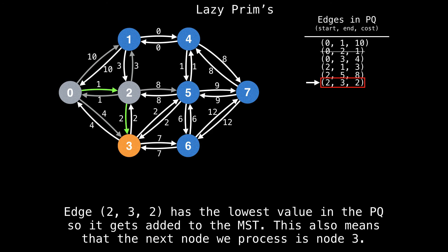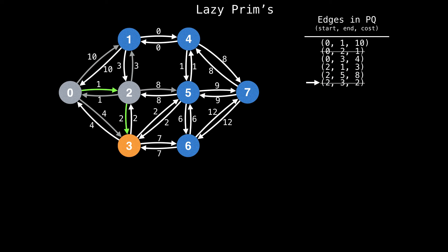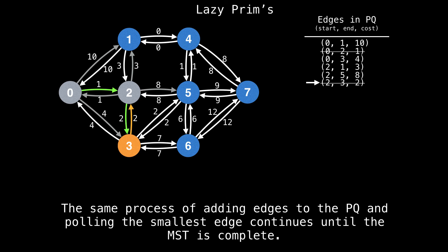So the next best edge in the priority queue is the edge from two to three with a cost of two, so it gets added to the minimum spanning tree. This also means that the next node we process is node three. The same process of adding edges to the priority queue and pulling the smallest edge continues until the minimum spanning tree is complete. I'll let the animation play until something interesting happens.